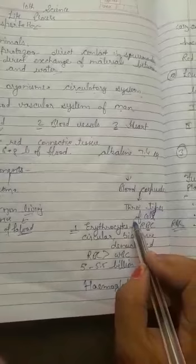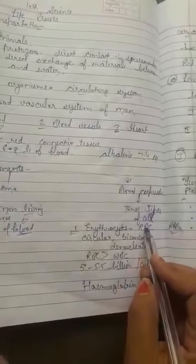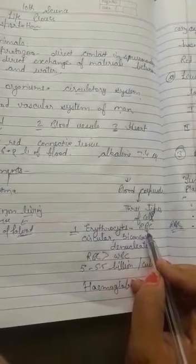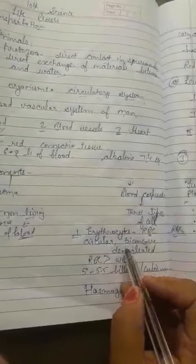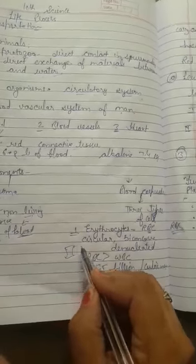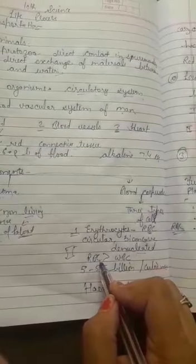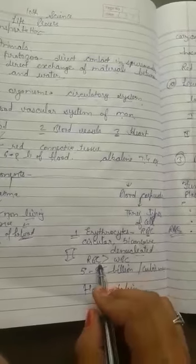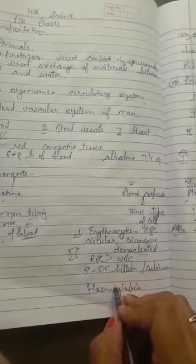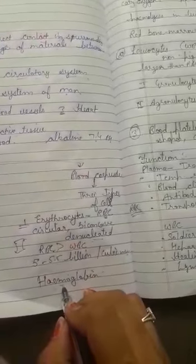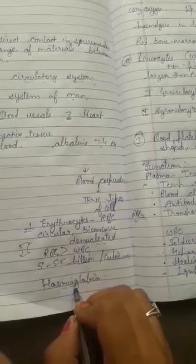Blood corpuscles has three types of cells. First is erythrocytes, also known as RBC or red blood corpuscles. This is circular shape, biconcave, denucleated meaning no nucleus. About 5 to 5.5 million per cubic millimeter of blood. Its function is hemoglobin carries oxygen.